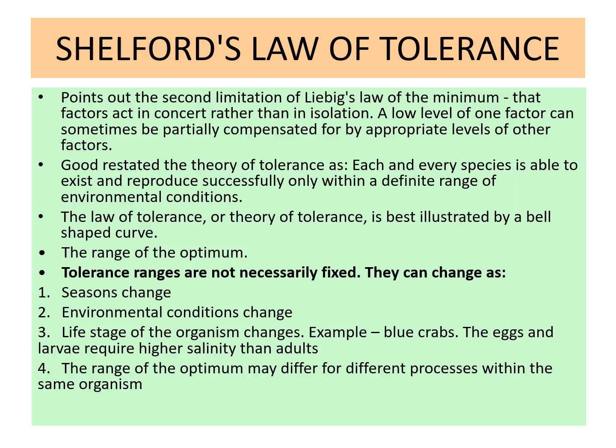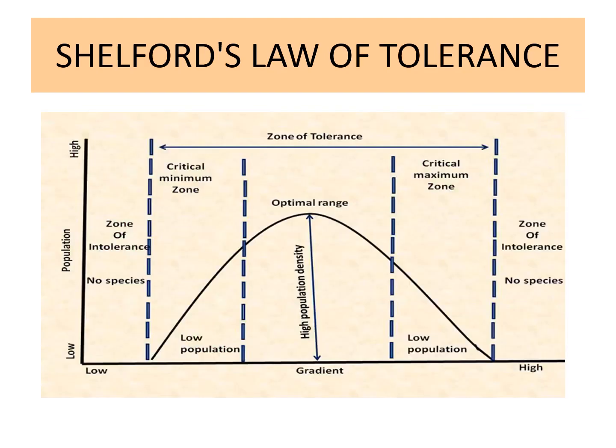The range of the optimum may affect different processes within the same organism. Where the individual feels comfortable, individuals are reproducing successfully. This can be shown in a graph drawn between population and the gradient — for example, temperature as one gradient.